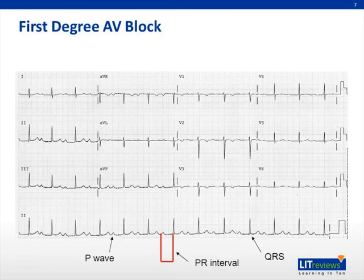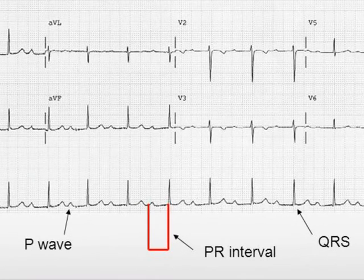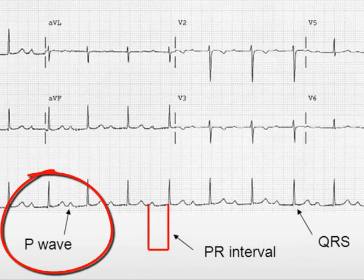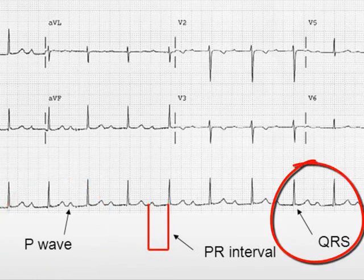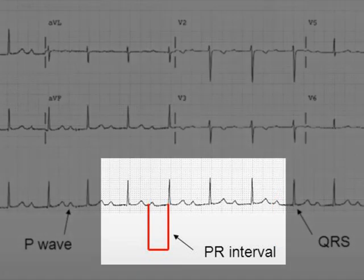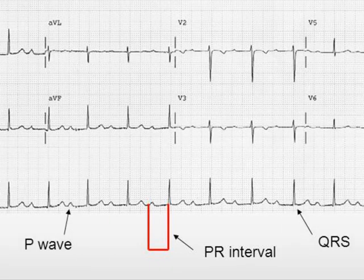This is a 12-lead electrocardiogram of a patient with first-degree atrioventricular block. Direct your vision to the P waves and QRS complexes labeled at the bottom of the slide. The red lines define the PR interval, which is measured from the beginning of the P wave to the beginning of the QRS complex. This patient's PR interval measures 330 milliseconds, meeting criteria for first-degree AV block regardless of age.